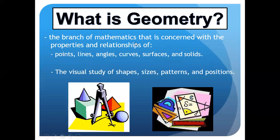Now we move on to the definition of geometry. So what is geometry? The branch of mathematics that is concerned with the properties and relationships of points, lines, angles, curves, surfaces, and solids. This is the exact definition of geometry.